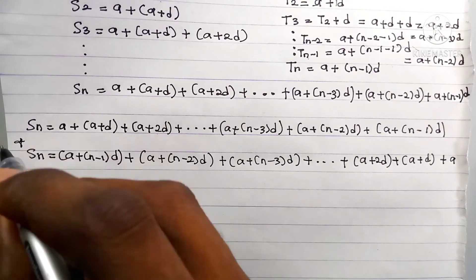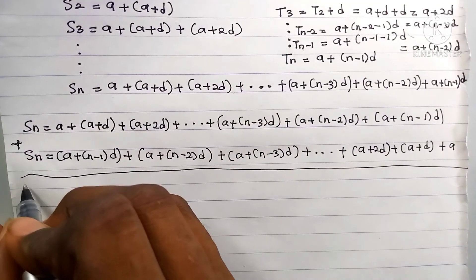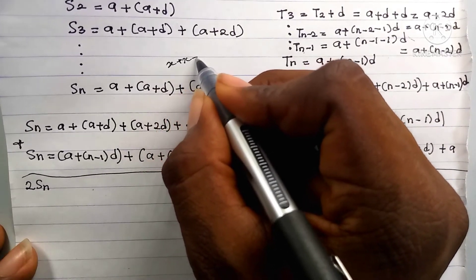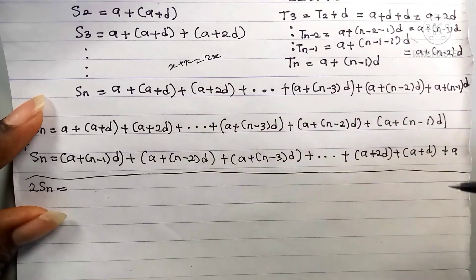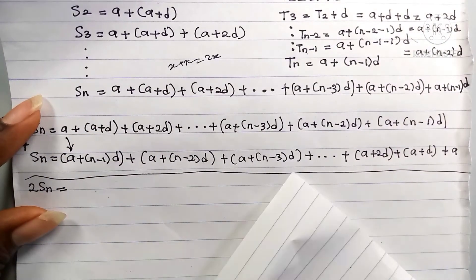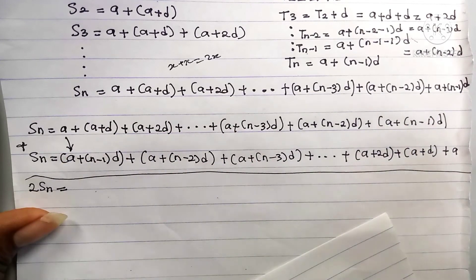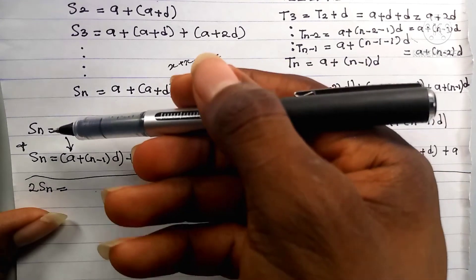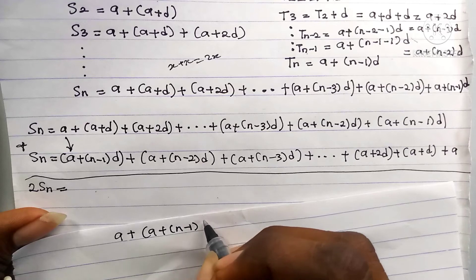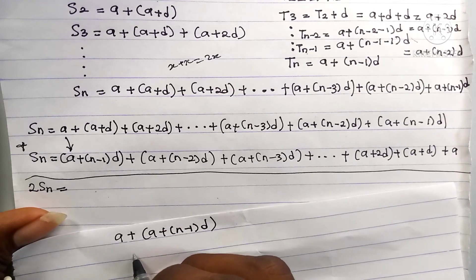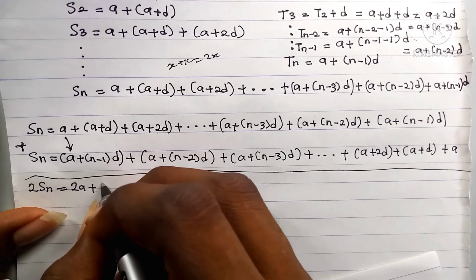Now let's add these two expressions for Sn together. Since Sn plus Sn equals 2Sn, just like x plus x equals 2x. Adding the first terms from each expression: a plus (a plus (n minus 1)d) equals 2a plus (n minus 1)d.